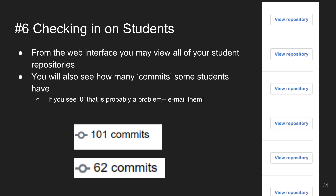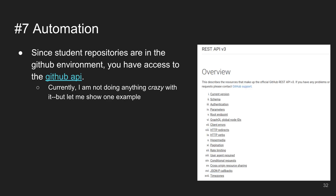That leads nicely into automation you can think about since you're in the GitHub framework. You have access to the whole GitHub API — you can do things like get all student repositories, see how many commits there were, how often they're committing. I'm not doing anything crazy with this yet, but I'm thinking about how to get useful information from it.